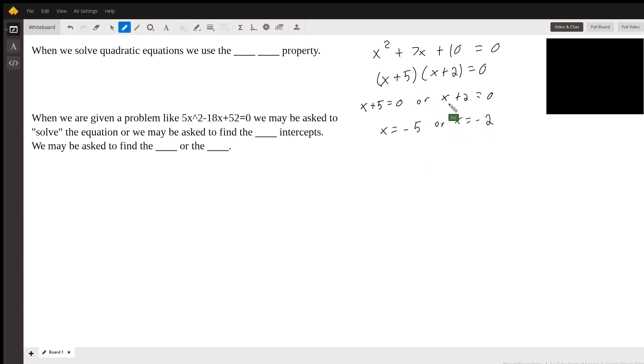Now if you plug these back in, that will give you a true statement because you get (-2)^2 which is 4, plus (-14), plus 10 equals zero, which is a true statement. And negative five also works.